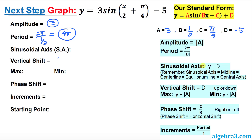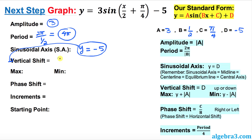The sinusoidal axis is simply y equals d, which is negative 5. By the way, sinusoidal axis is also called midline, central line, central axis, or equilibrium line. From this, our vertical shift is 5 units, and the negative sign tells you it's going to be downward.